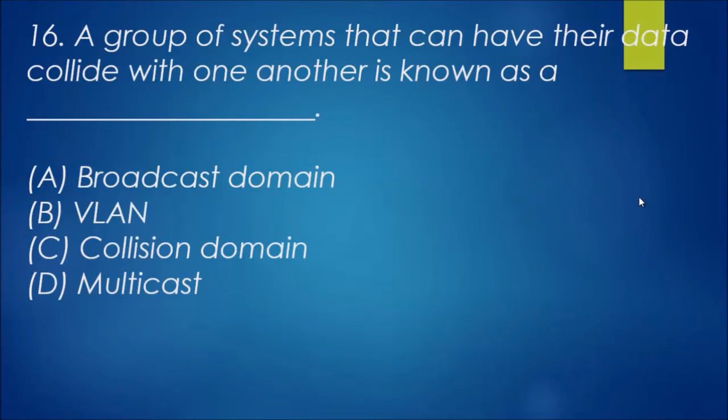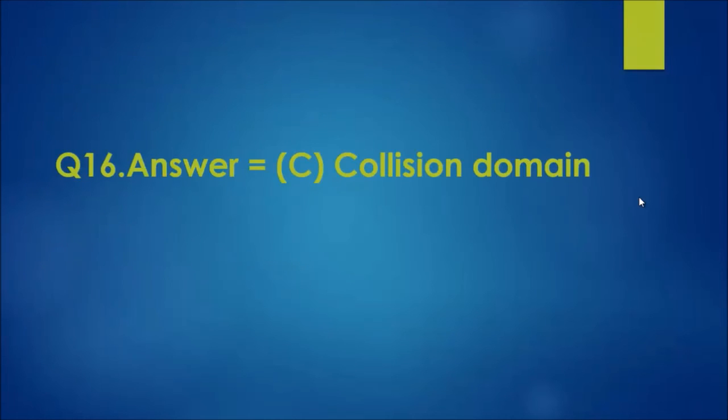Number 16: a group of systems that can have their data collide with another is known as a blank. This one isn't too bad - in fact, the answer is right there. Collision domain is the answer. That's basically an area of the network where systems collide with one another. Each port on a network switch or bridge creates a separate collision domain, whereas all ports on a hub are part of the same collision domain. So that is C for that one.